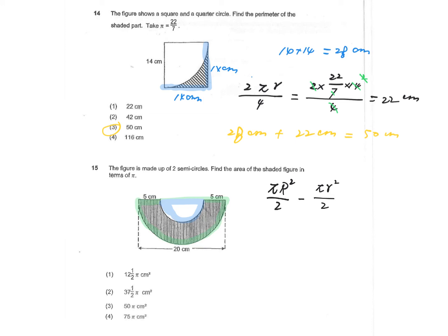Let's figure out the capital R and the lowercase r respectively. You can see that for the big semicircle, the diameter is 20 centimeters, so the radius should be 10 centimeters.